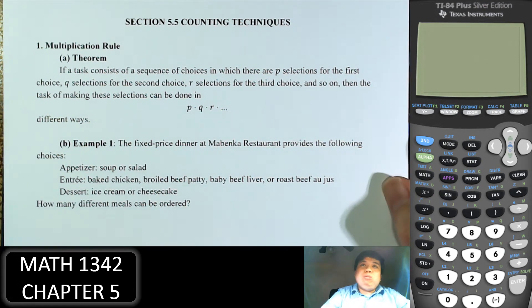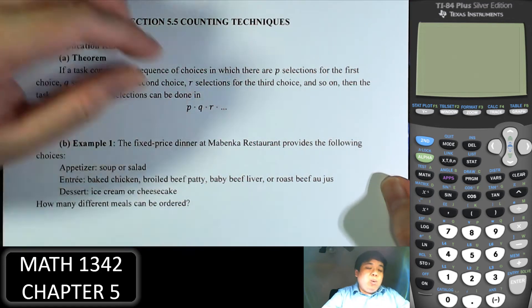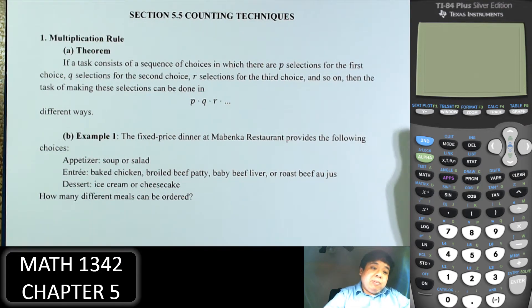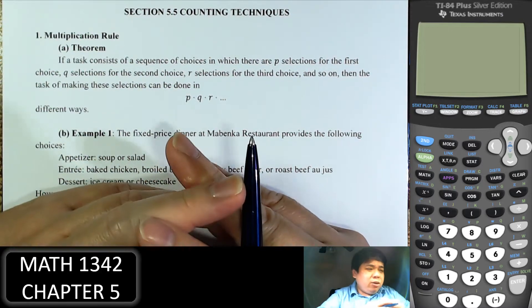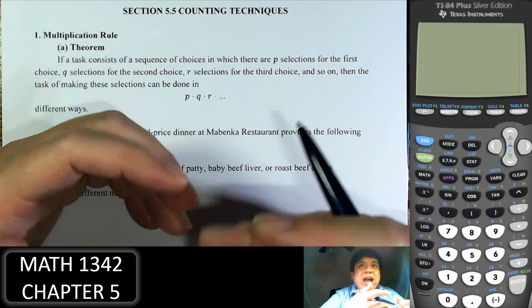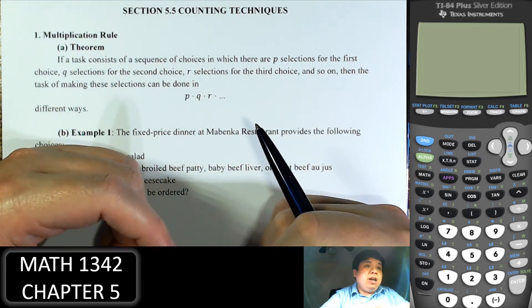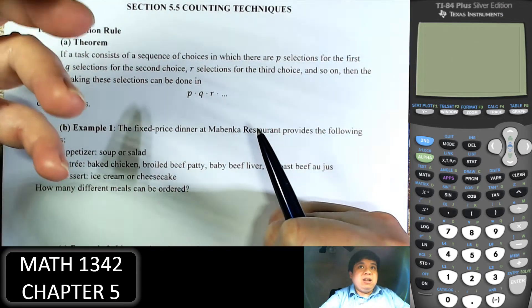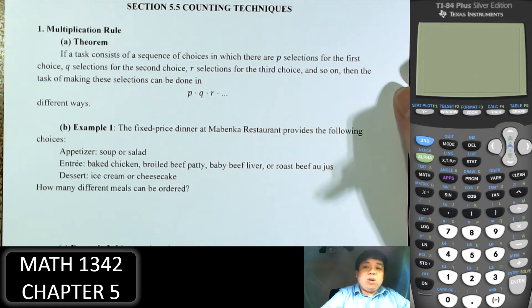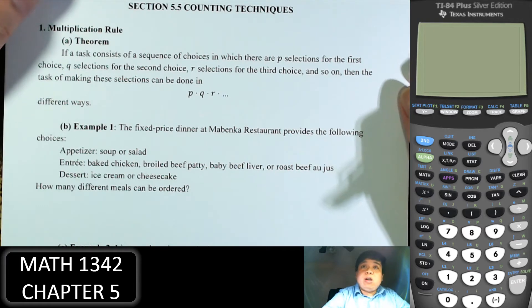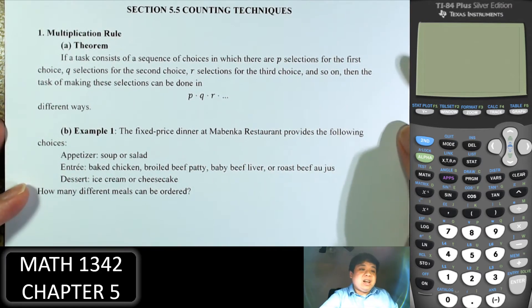Hey everybody, welcome to another video in statistics. We continue chapter 5, learning about probability. The most fundamental aspect of probability is to be able to count how many we have in the sample space and how many we have in the event, then we divide them. That is classical probability. This section focuses on techniques of counting.